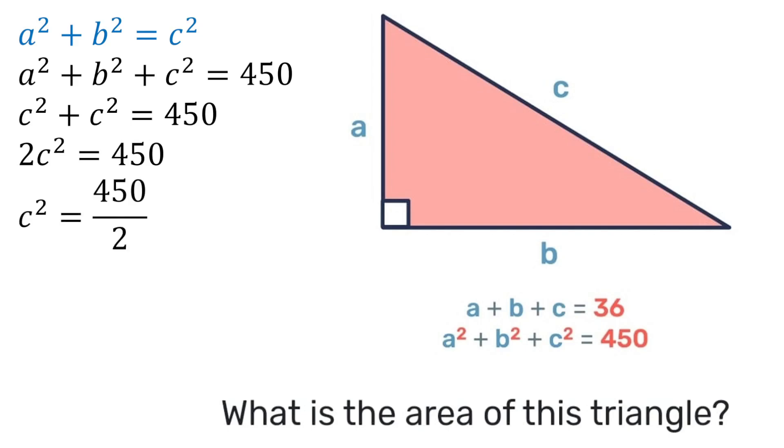c squared will then be 450 divided by 2, which gives us 225. So we can find the value of c by finding the square root of 225, which gives us that c is 15.